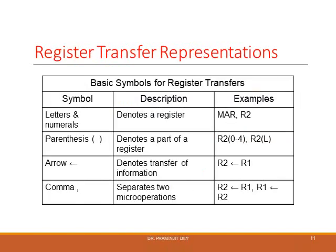Registers are represented with capital letters or capital letters followed by numerals. The part of a register can be denoted by parenthesis — for example, R2 within bracket 0 to 4 means the lower 5 bits of register R2. R2 within bracket L means the lower byte of R2. The arrow shows transfer from register X to register Y, and a comma separates two micro operations — so R1 to R2 is one micro operation and R2 to R1 is another.